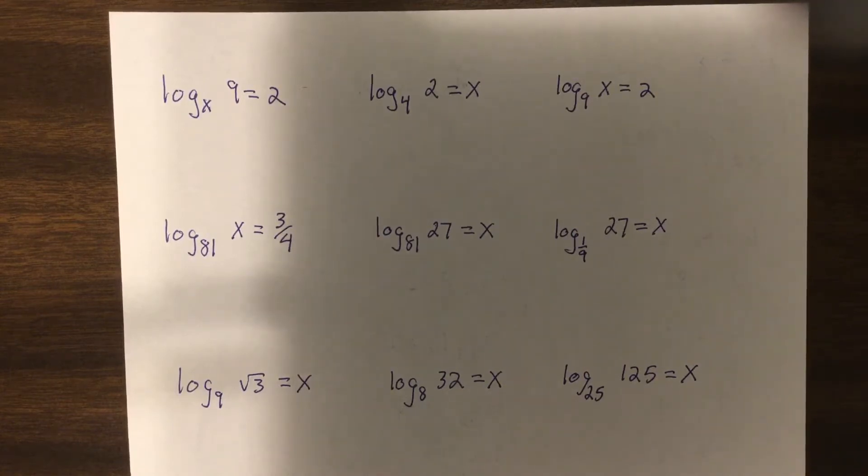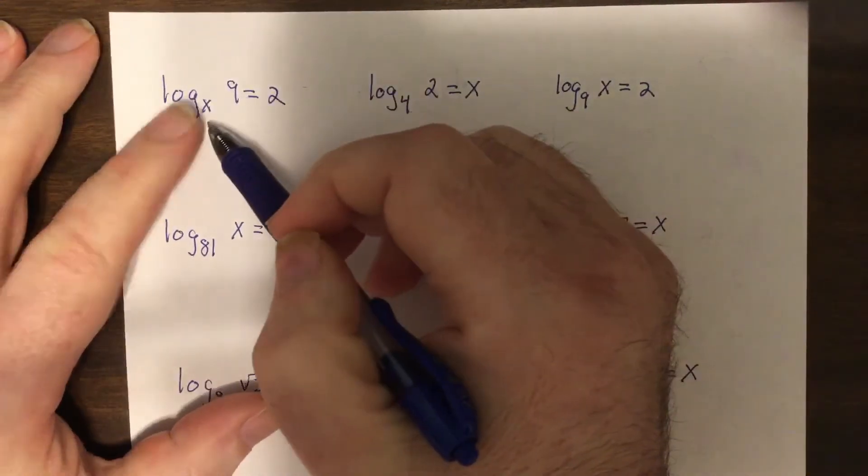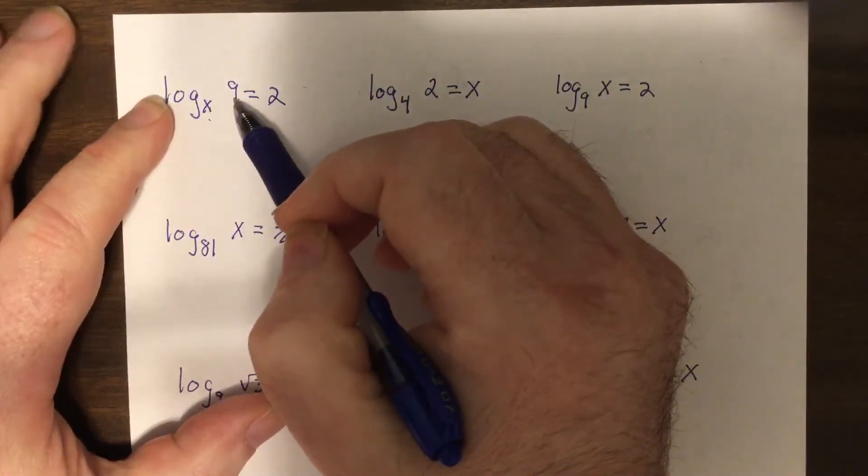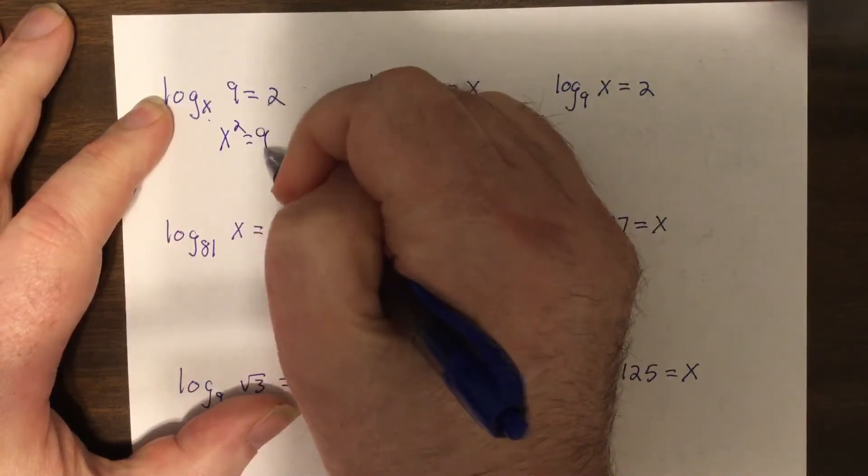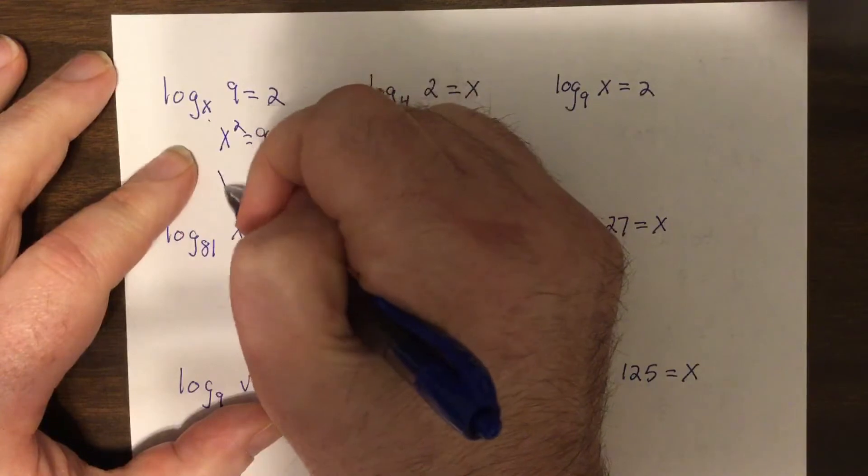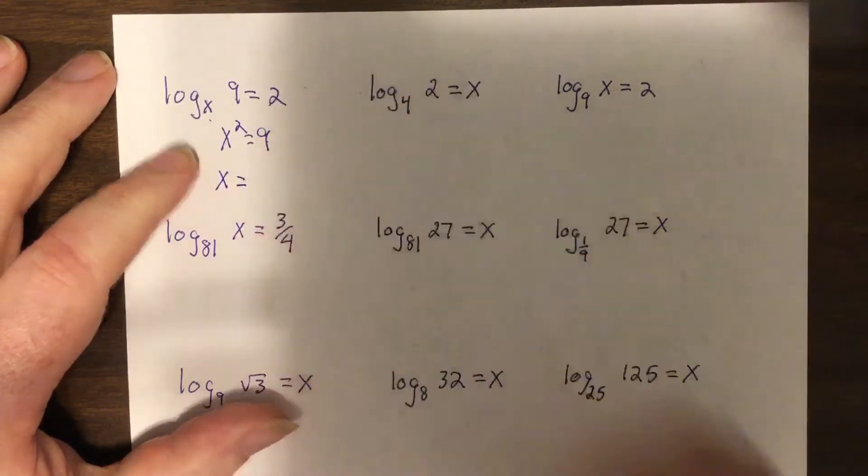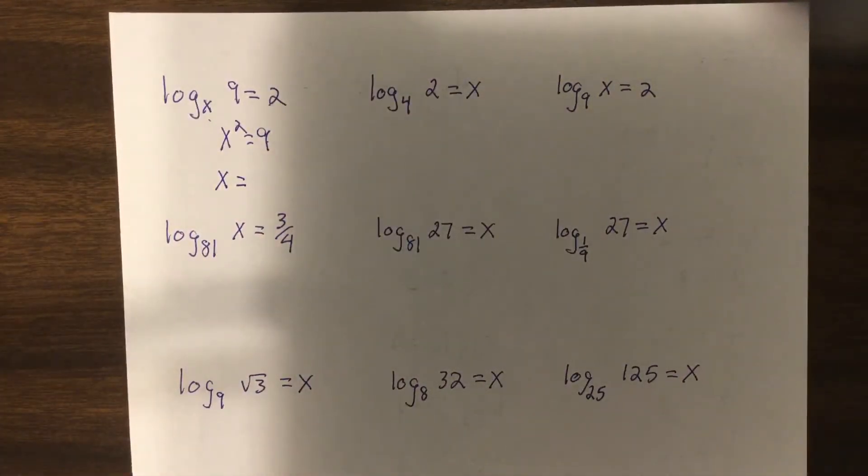So this base power equals, so it'd be x squared equals nine. Square root both sides. Now normally you'd say plus or minus three, but the base can't be negative, so the answer is just three.